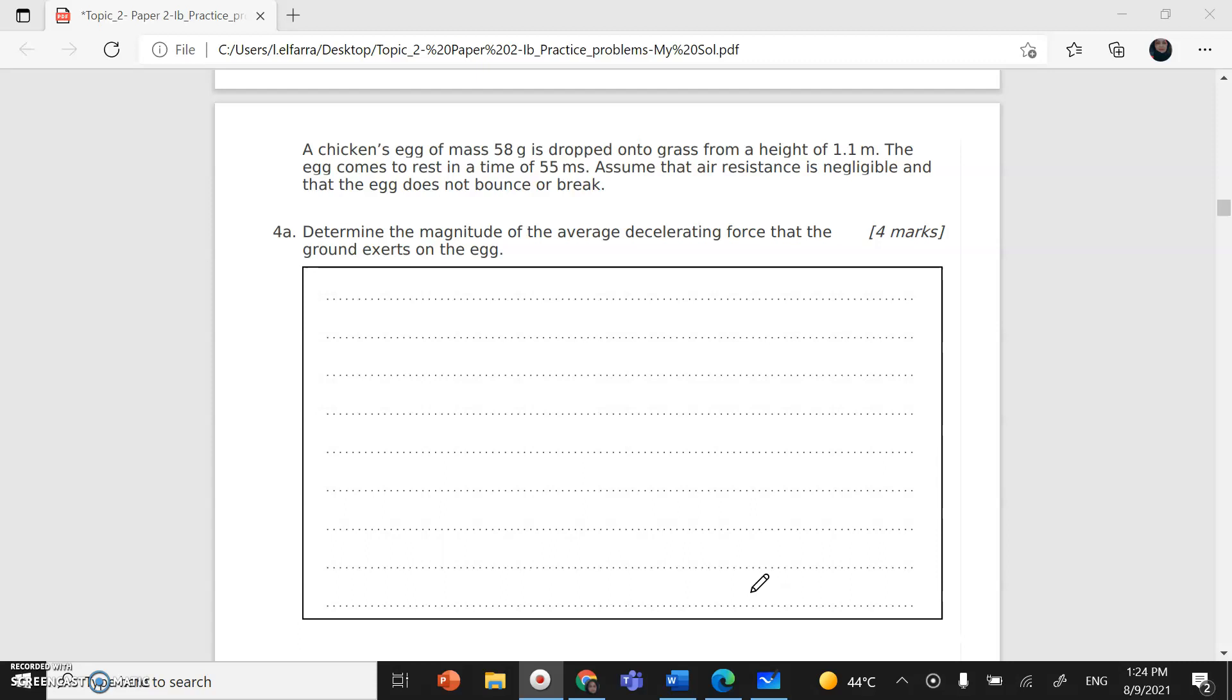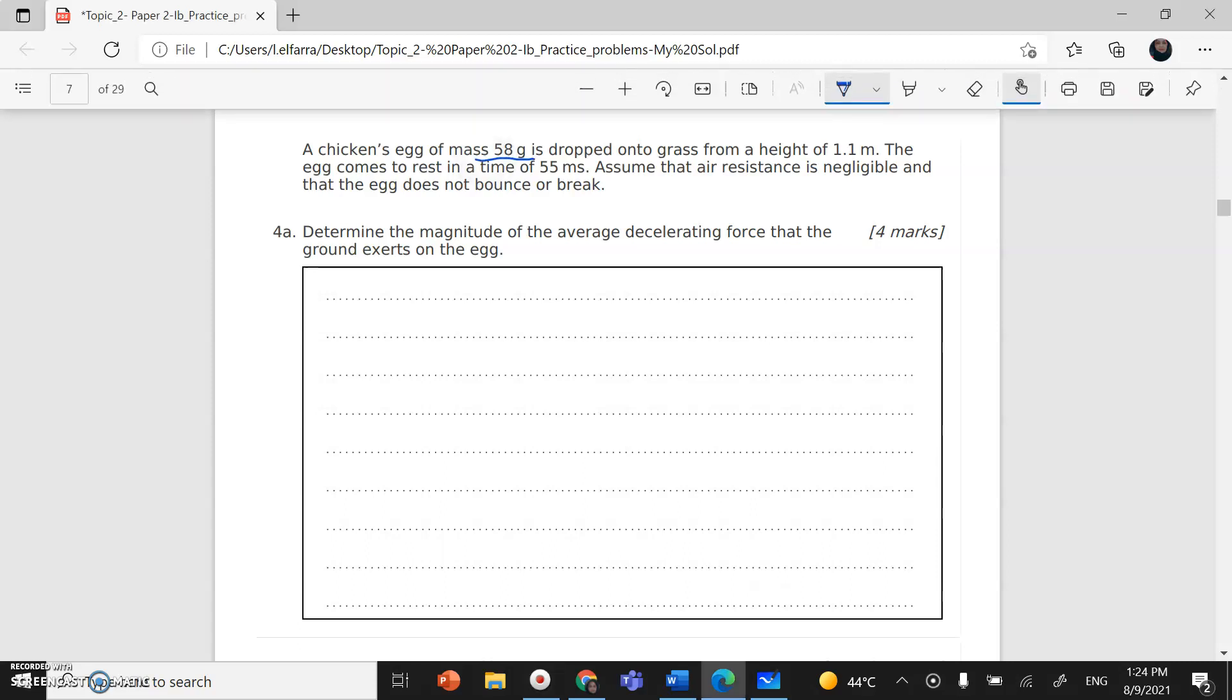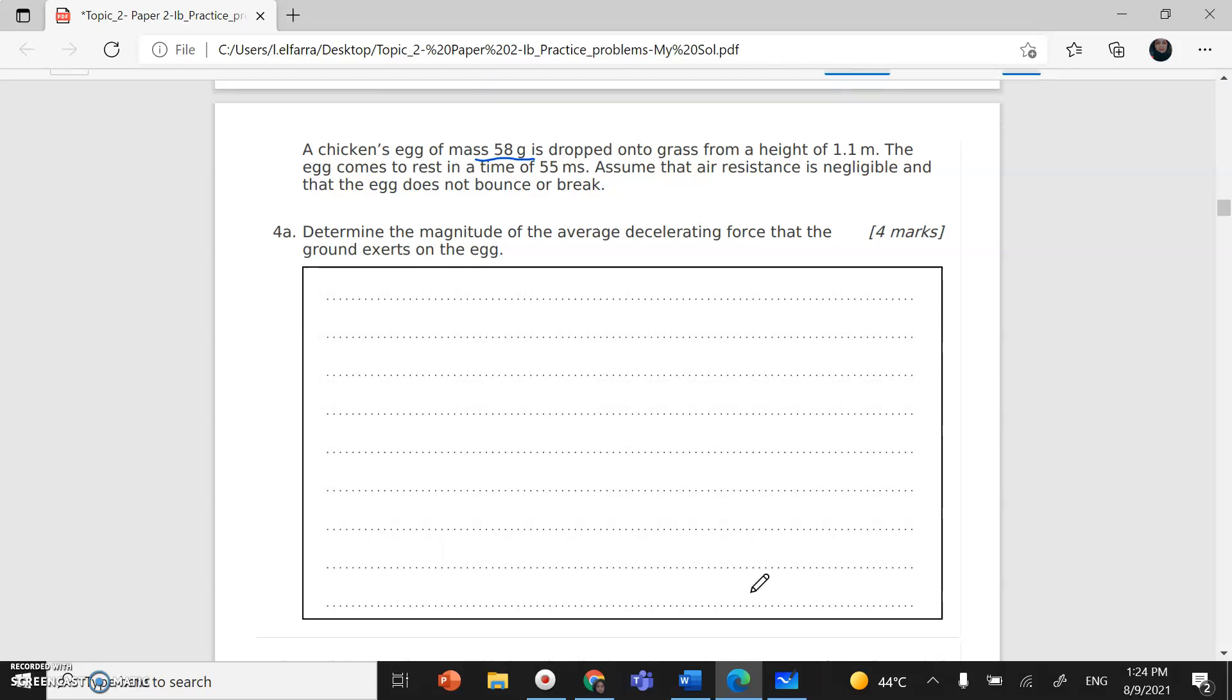Question number 4 says you have a chicken egg. The mass of this chicken egg is 58 grams. To convert from gram to kilogram, always use SI units. All the units should be consistent. So divided by 1,000, it will be 0.058 kilograms or 58 times 10 to the power negative 3.